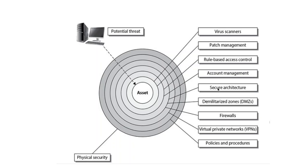The next layer is secure architecture — it's very important to ensure that you have architected your system well at the architecture level. After that are demilitarized zones, which means the area is not open to the internet. It's a secured area with firewalls.